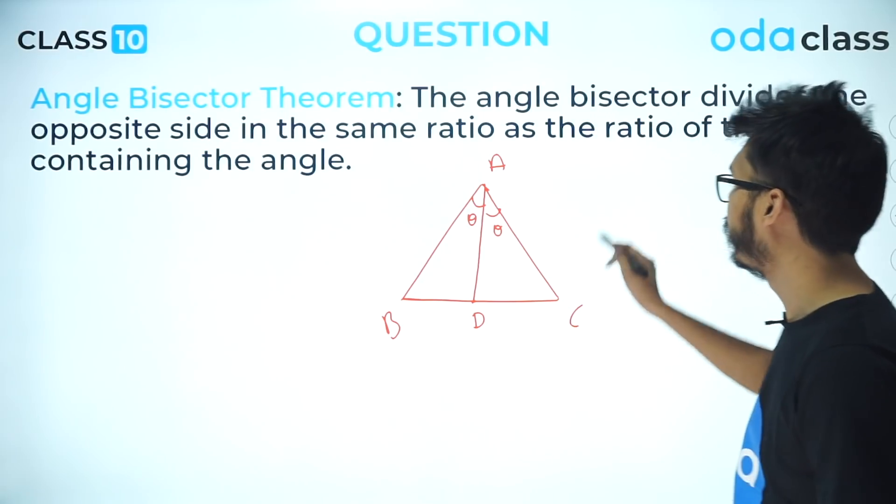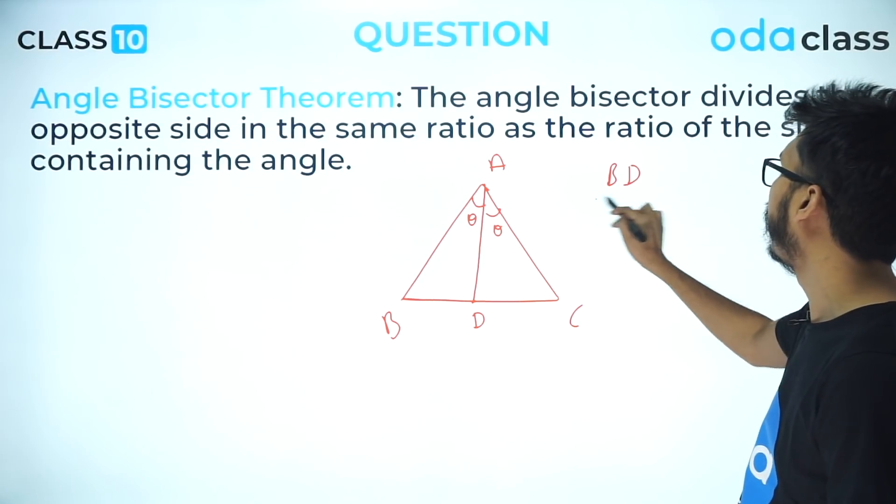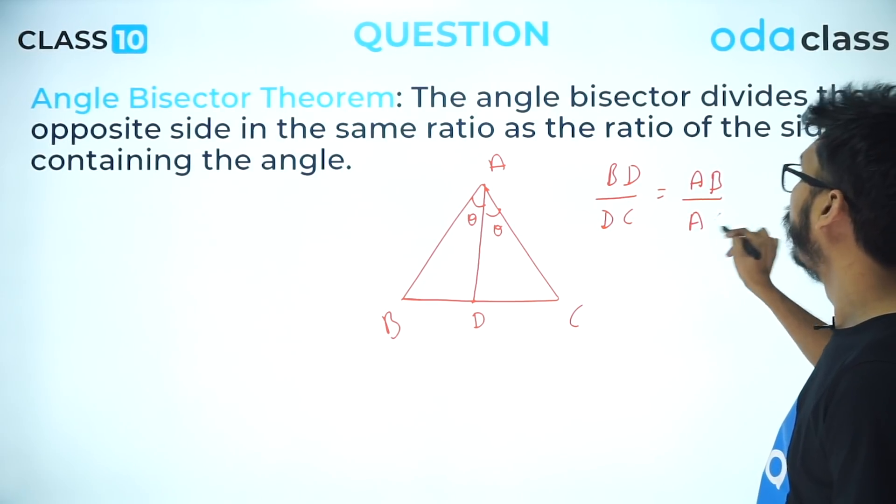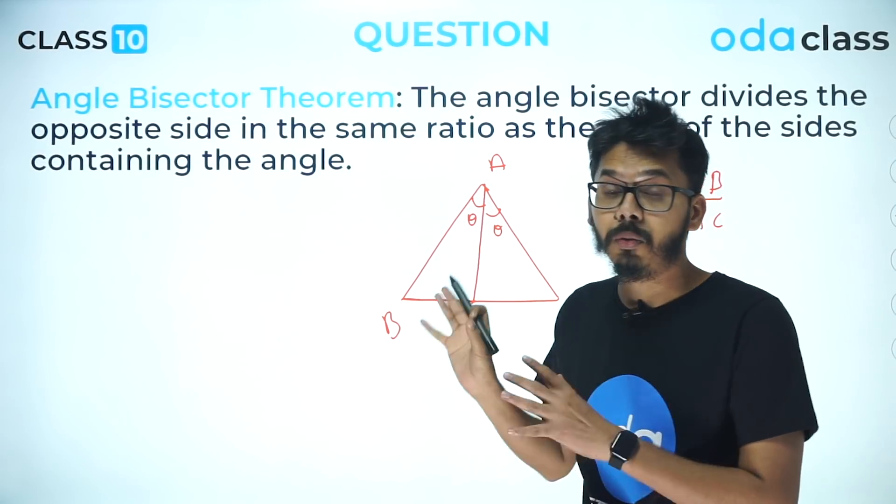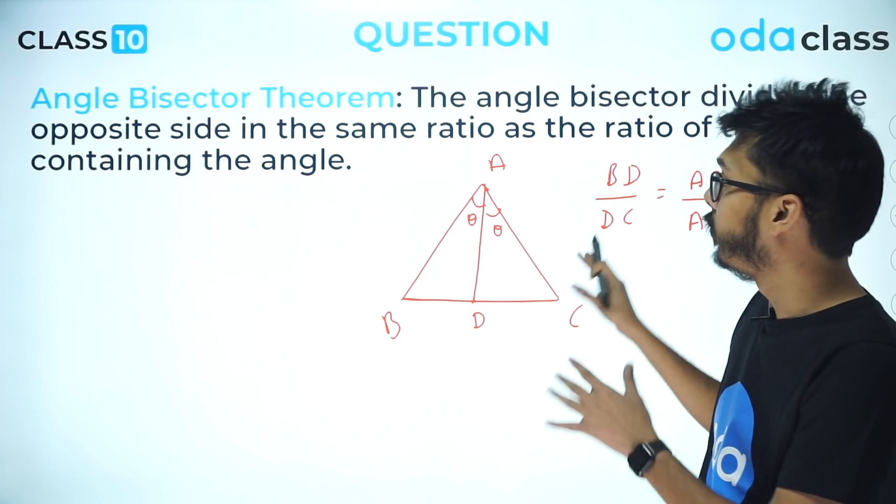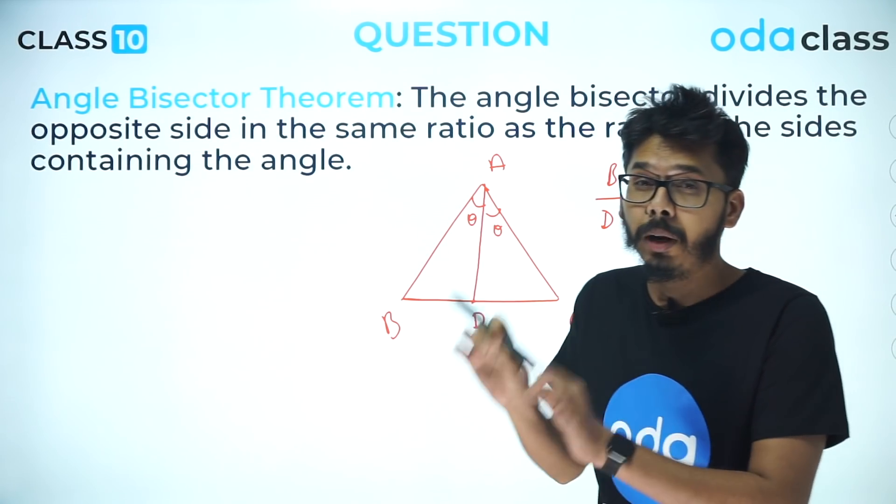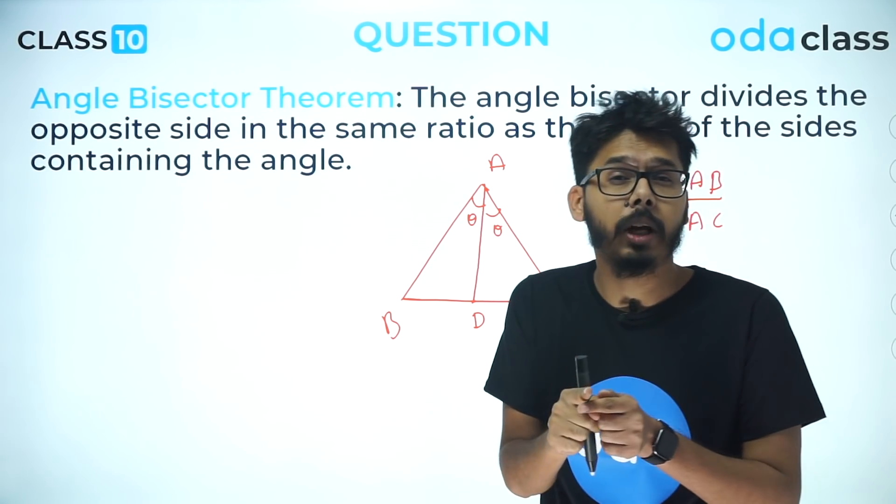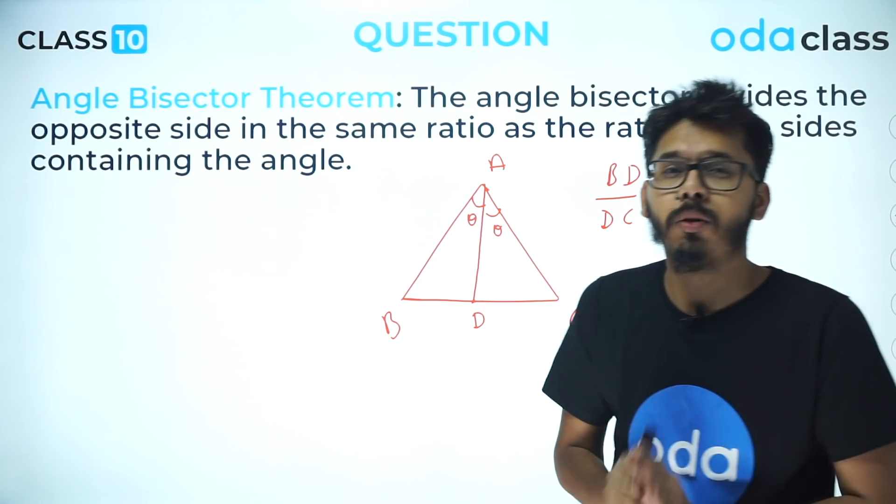That is, the angle bisector of a triangle divides the opposite side in the ratio of the adjacent sides. So I can write BD by DC equals AB by AC. Guys, don't forget this relation between the ratios, because if you forget this, you might miss out one mark. This is going to come in a one-mark objective type question. Use this formula and get that one mark.